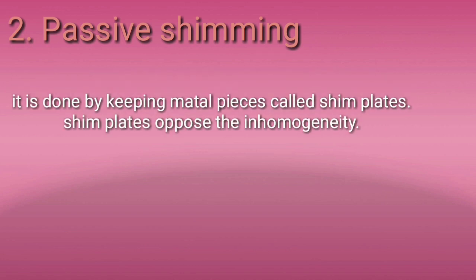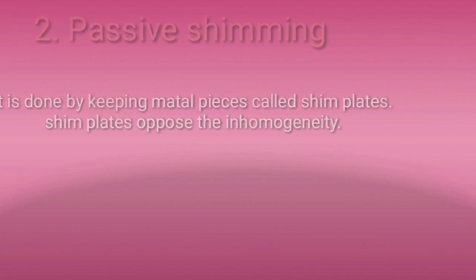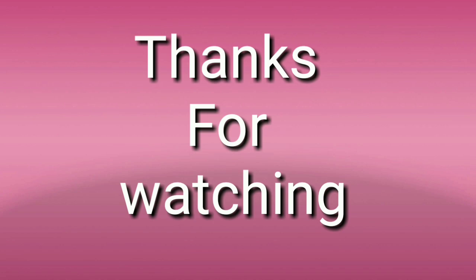The second type is passive shimming. It is done by keeping metal plates called shim plates. These shim plates oppose inhomogeneity — meaning non-uniform magnetic fields — and maintain homogeneity. That's all for this video. Do subscribe if you like, and thanks for watching.